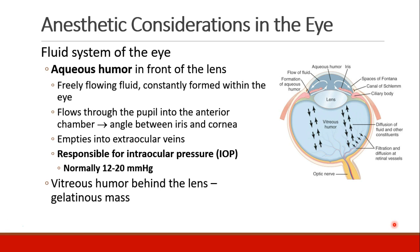First, some quick anatomy. The eye has a fluid system. We see here the front of the eye, where the cornea is. Behind it, we have the aqueous humor, which is in front of the lens. The fluid flows freely and is constantly formed within the eye. It flows through the pupil into the anterior chamber in front of the lens, and then exits in the angle between the iris and the cornea.